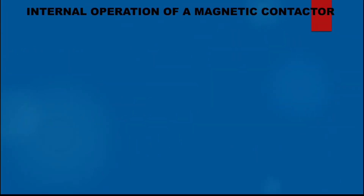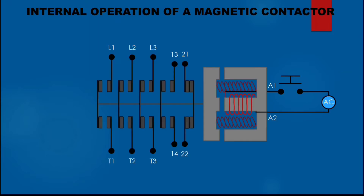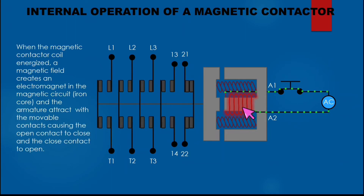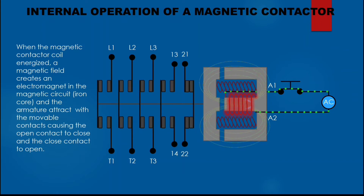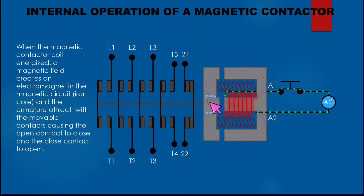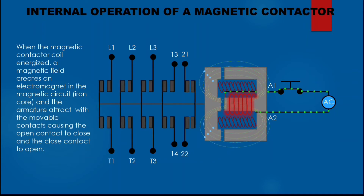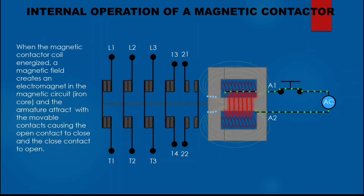Internal operation of a magnetic contactor: when the magnetic contactor coil is energized, a magnetic field creates an electromagnet in the magnetic circuit. The iron core and the armature attract with the movable contacts, causing the open contact to close and the closed contact to open.